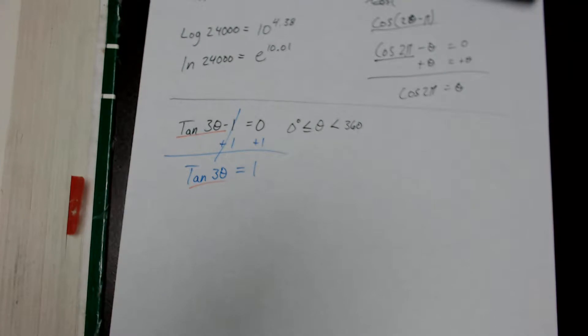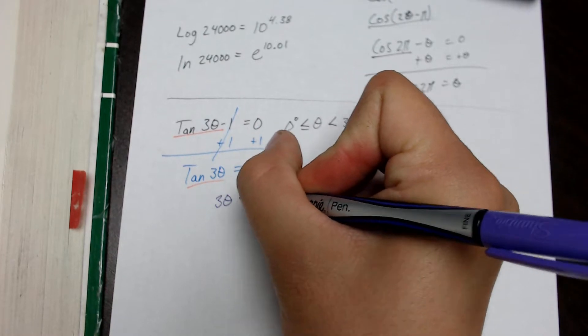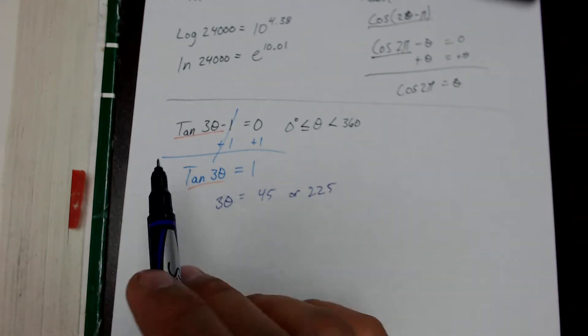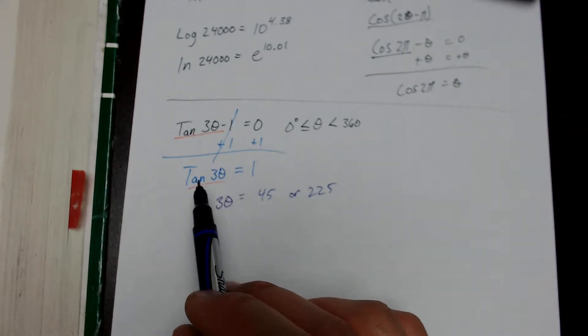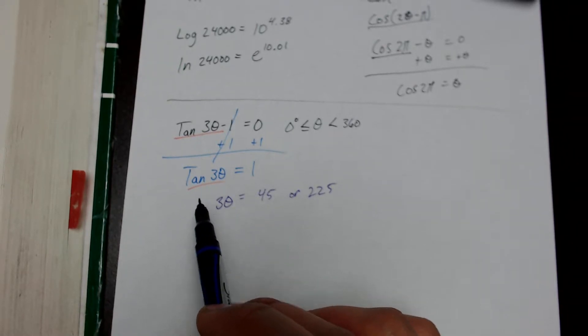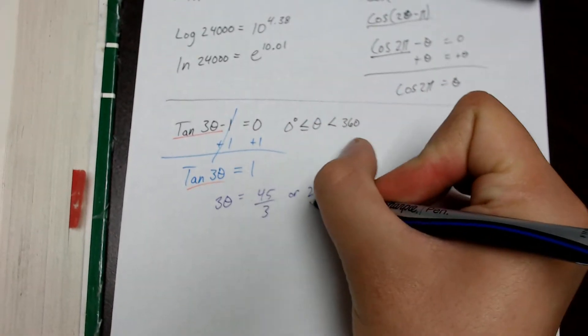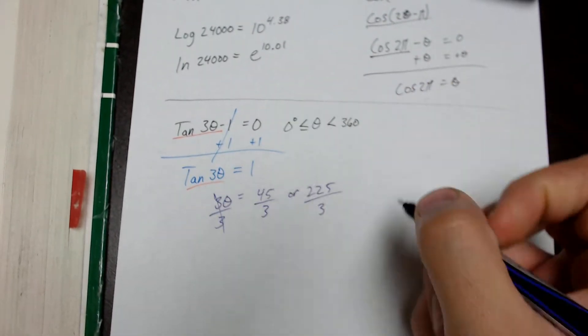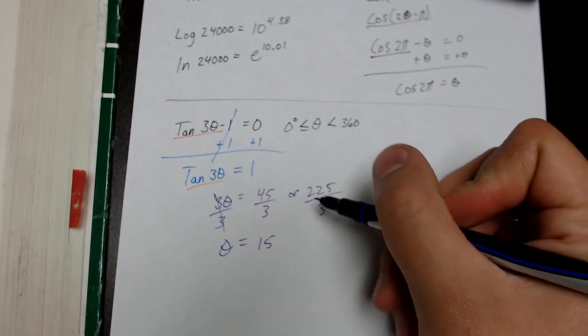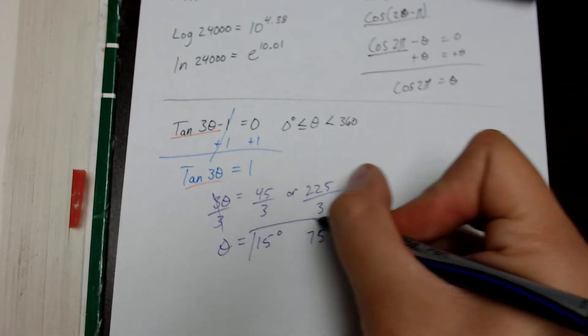So for tangent 3θ equals 1, we know that 3θ is going to equal 45 or 225. Now, in looking up the unit circle and figuring out what the tangent of 3θ is, we've undone this tangent technique. So now all we have to do is solve for θ by dividing 225 by 3, 45 divided by 3. So what that will give us is θ will be equal to 15 or, let's see here, 225, that's going to be 75. 15 or 75, and that is what θ is equal to.